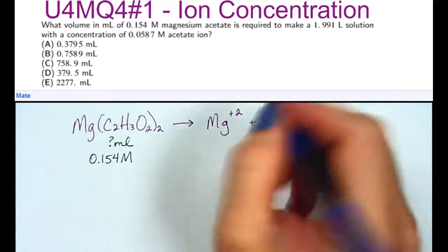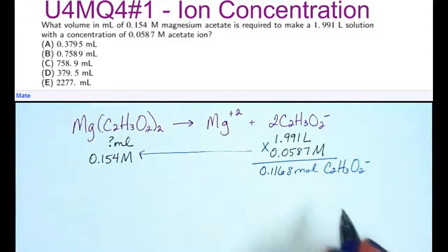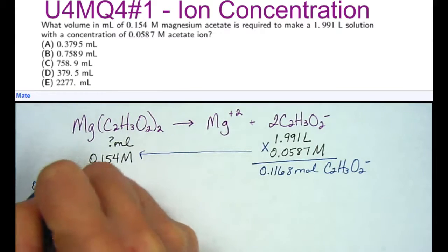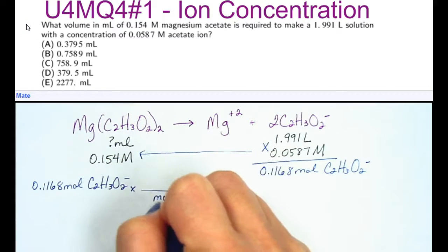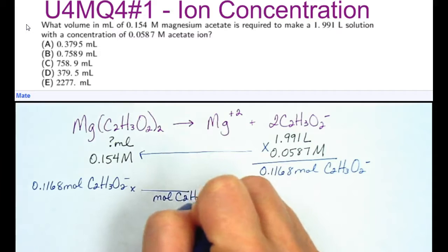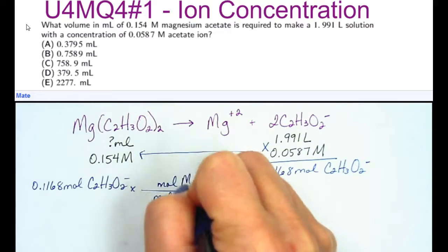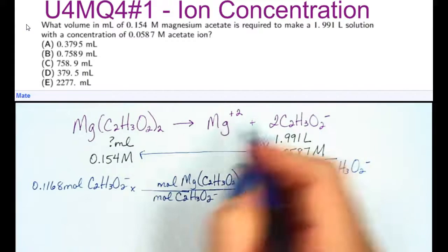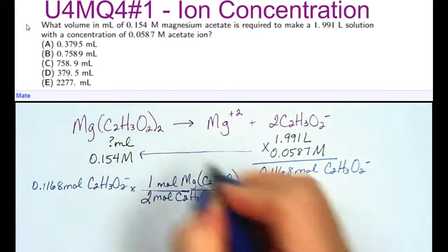Now that we're at moles, we can actually stoic from the acetate ion to the magnesium acetate. So I'll place 0.1168 moles of acetate times your own line, and we'll do a mole to mole ratio from the acetate to the moles of magnesium acetate. And there is 2 moles of acetate ions to 1 mole of magnesium acetate.